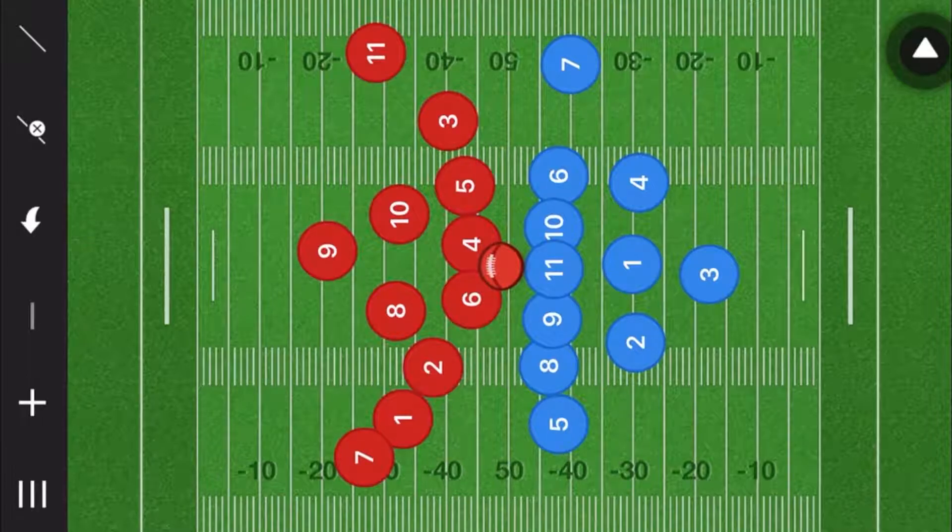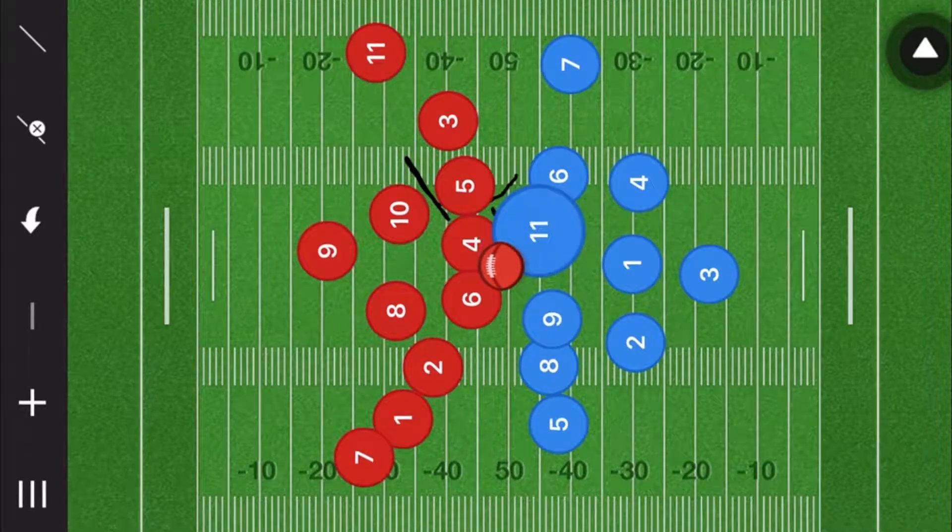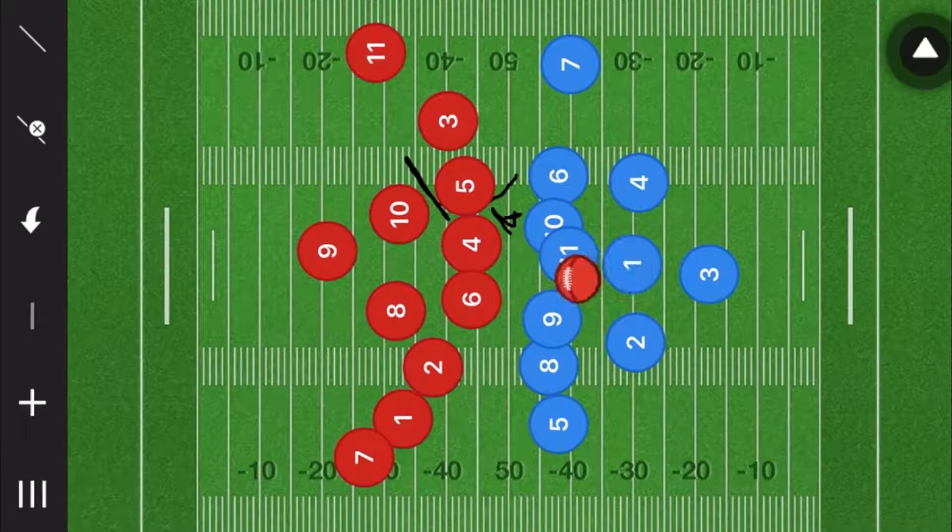He's going to be blocking player 10. Then we're going to have player 10 blue blocking four red. Player 11 is going to block six. We need to get that football out of the way. He is going to block that guy.